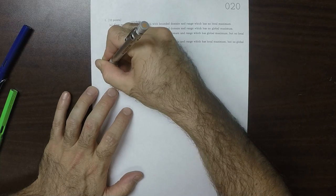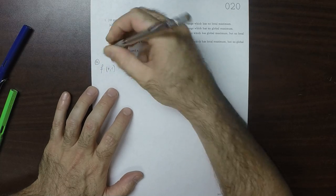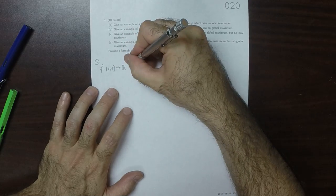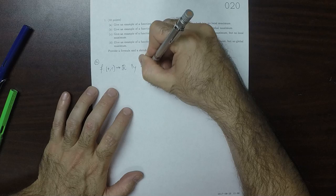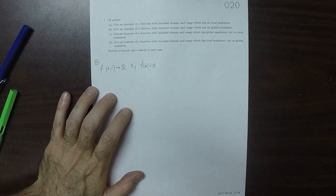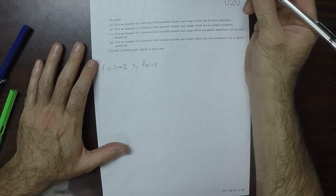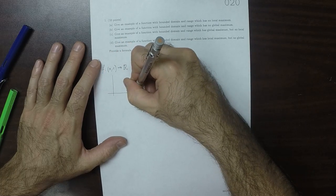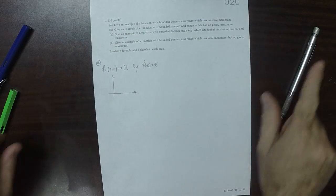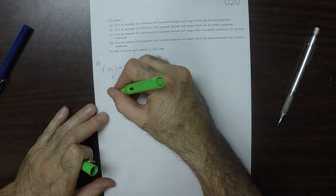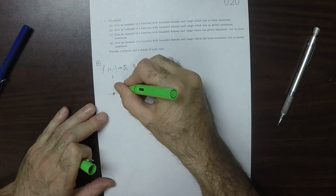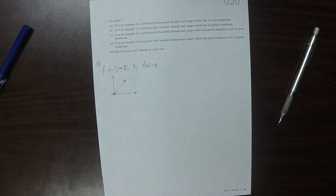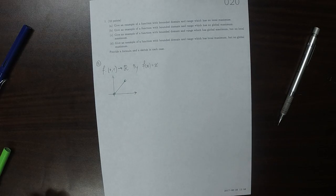So how about f from (0,1) to the reals by the identity function, f(x) = x. Well, in this case, it's just a straight line segment with no endpoints, no local maximum.